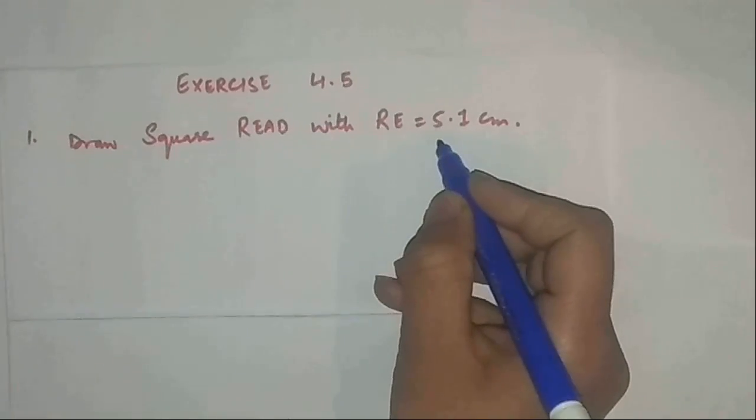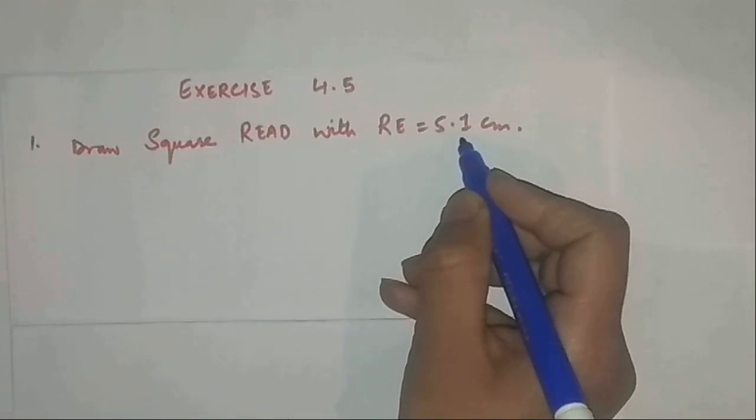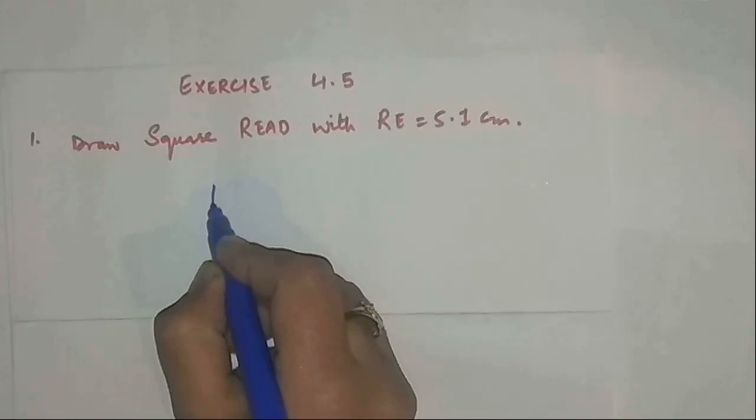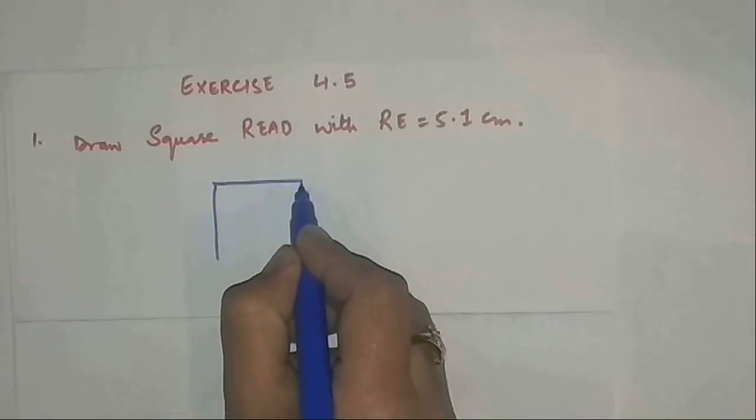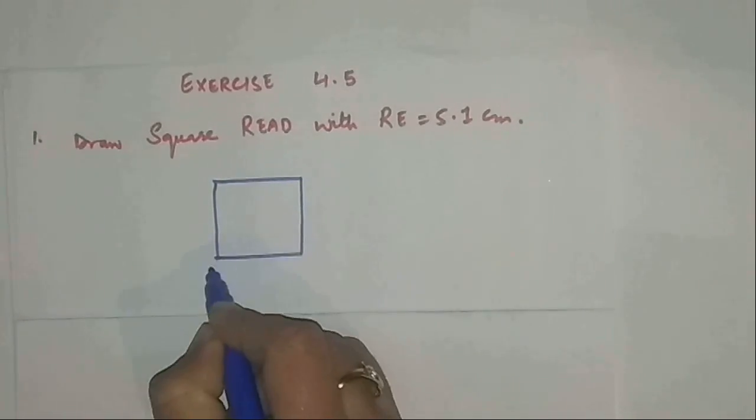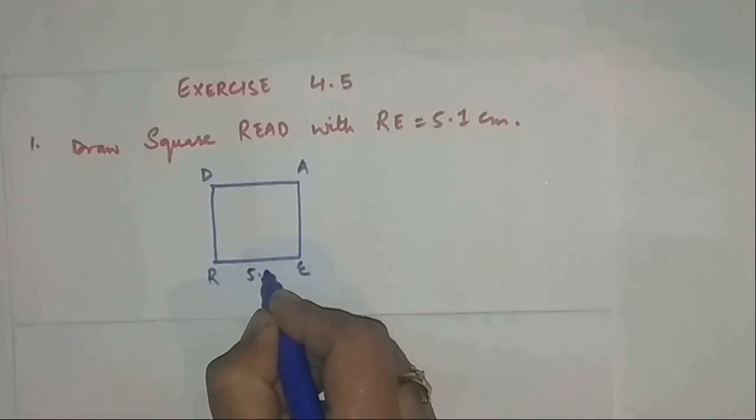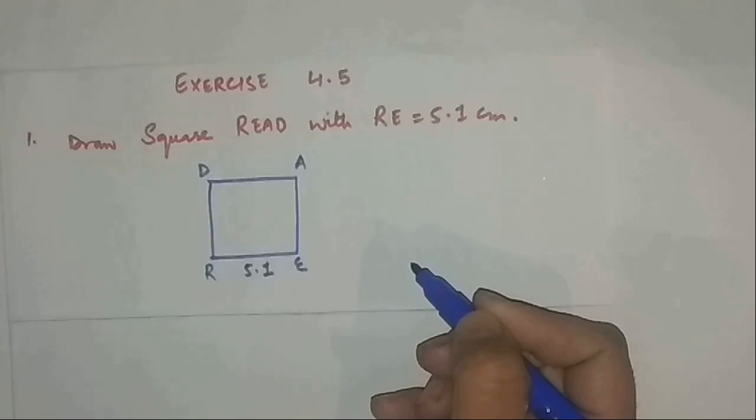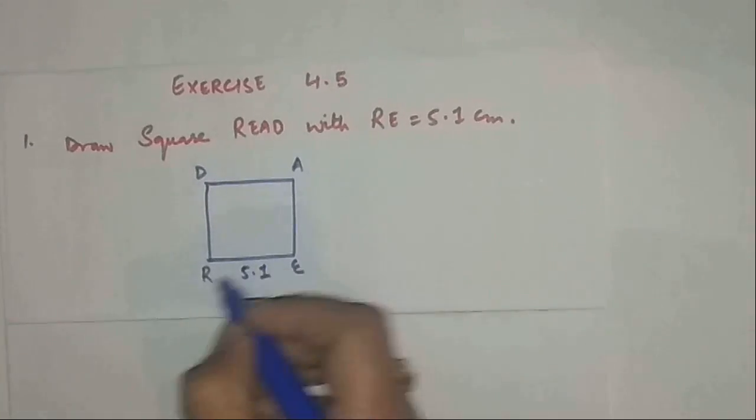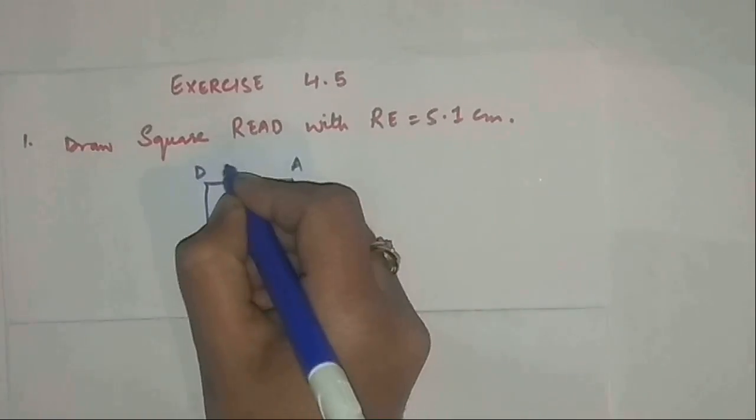Draw square READ with RE equal to 5.1 centimeters. So the figure will be like this. If this is the square READ, what is given is just one side, this is 5.1, but you know the properties of a square that all the sides are equal, so all the sides will be 5.1.